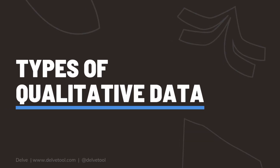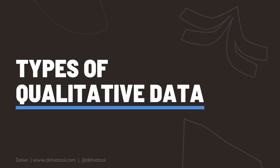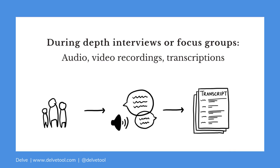Next, we'll describe different types of qualitative data and discuss ways you can analyze qualitative data to make sense of it. One primary way to collect qualitative data is through in-depth interviews or focus groups. When conducting those, you can collect audio recordings or video recordings, which you can transcribe into written word in the form of transcriptions. These audio recordings, video recordings, and transcripts are all forms of qualitative data.